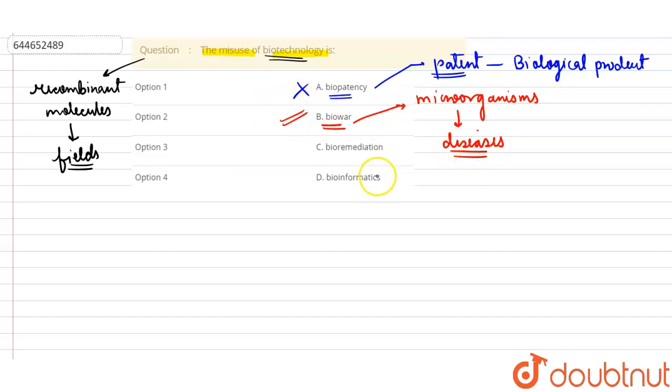Let's move on to option C: bioremediation. Bioremediation is used to remove heavy metals from the environment or to prevent heavy metal toxicity. So this is the utilization of biotechnology, not the misuse. This can't be the correct option.